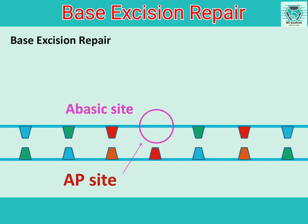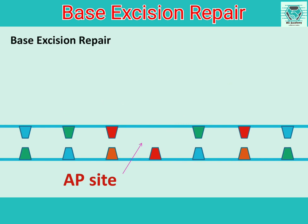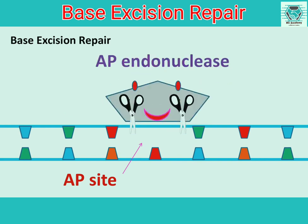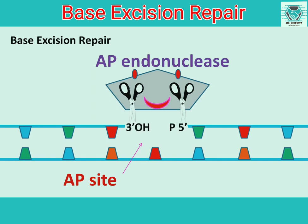Sometimes it is also referred to as apurinic or apyrimidinic, that is, which portion is devoid of a purine or pyrimidine. In the next step, AP endonuclease cleaves the region to create a 3'OH group and a 5' phosphate group.